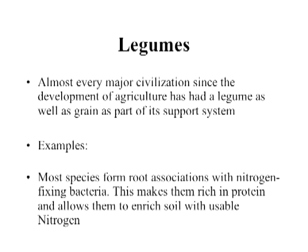Along with grains, almost every major civilization since the development of agriculture has had a legume as well as a grain as part of its support system. Classic examples include rice grown with soybeans in Asia, corn grown with beans in the Americas, and barley grown with lentils. Most legume species form root associations with nitrogen-fixing bacteria, which take nitrogen from the air and convert it into a form usable by plants. This makes legumes rich in protein and allows them to enrich the soil — good from both a health and an agricultural perspective.